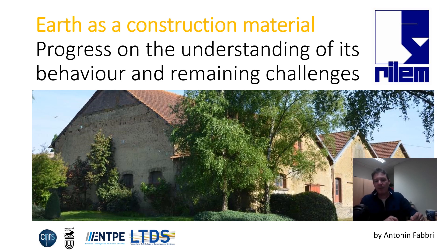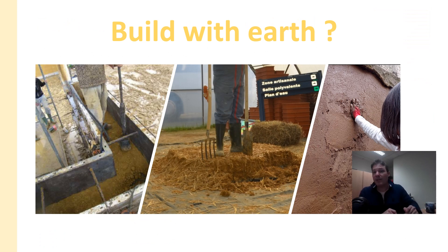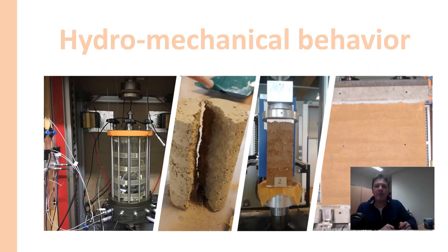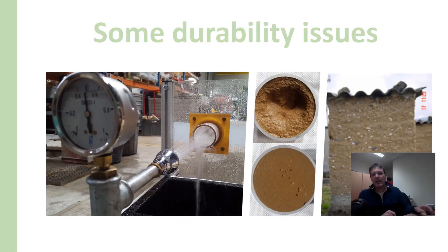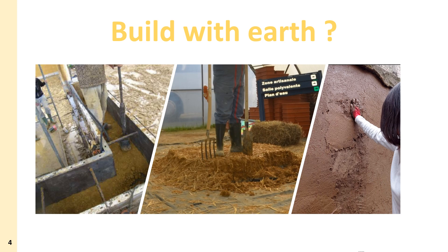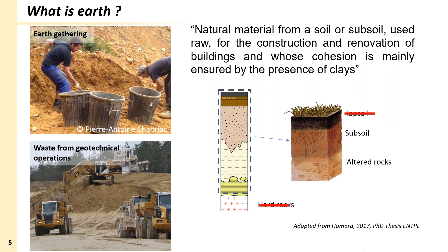My presentation will be divided into three main parts. The first part is dedicated to the definition of what is earth, what is earthen construction, and what is earth material. The second part focuses on the mechanical behavior of the material and its coupling with water content. The third part addresses the crucial durability issue. I will begin with the definition of raw earth. Raw earth should be a natural material from the soil or subsoil, used raw for the construction and renovation of buildings, whose cohesion is mainly ensured by the presence of clays.